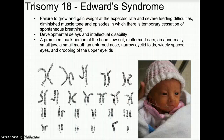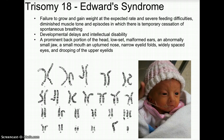Trisomy 18, also called Edwards syndrome, is characterized by failure to grow and gain weight at the expected rate, severe feeding difficulties, diminished muscle tone, episodes of temporary cessation of spontaneous breathing, developmental delays, and intellectual disability. Physical features include a prominent back portion of the head, low-set and malformed ears, an abnormally small jaw and small mouth, an upturned nose, narrow eyelids, widely spaced eyes, and drooping of the upper eyelids.